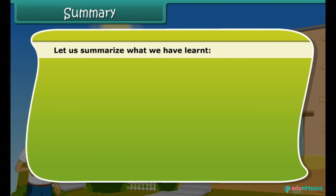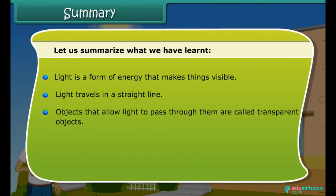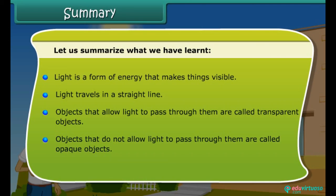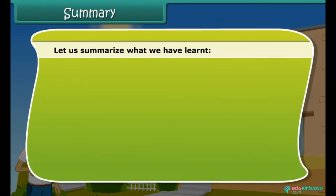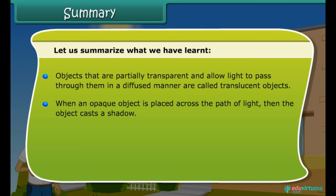Let us summarize what we have learned. Light is a form of energy that makes things visible. Light travels in a straight line. Objects that allow light to pass through them are called transparent objects. Objects that do not allow light to pass through them are called opaque objects. Objects that are partially transparent and allow light to pass through them in a diffused manner are called translucent objects. When an opaque object is placed across the path of light, the object casts a shadow. Change of direction of light by a shiny surface is called reflection of light.